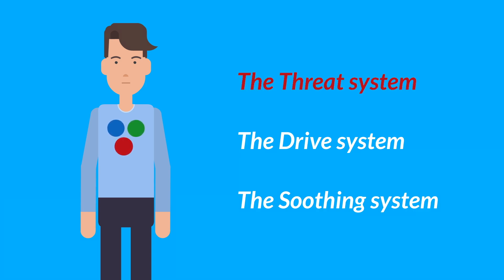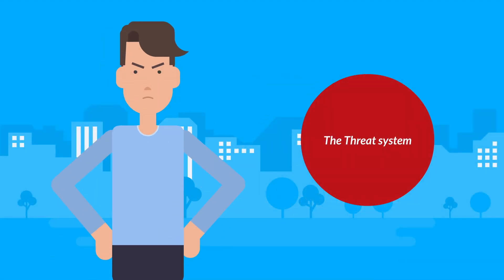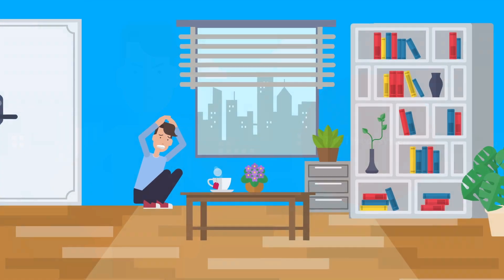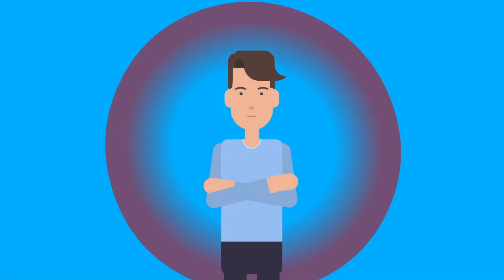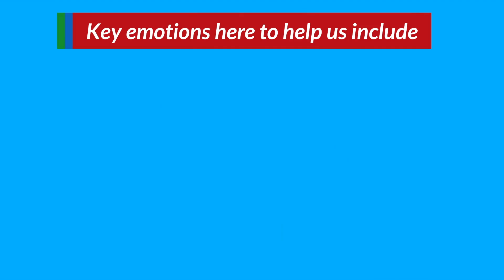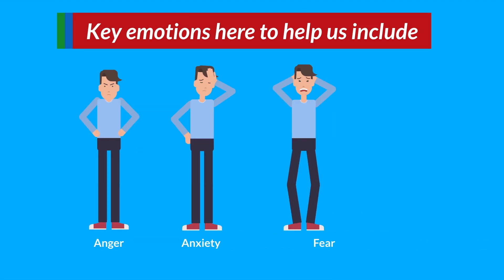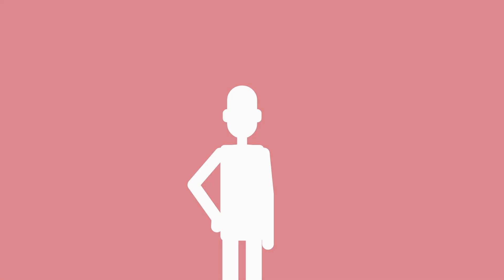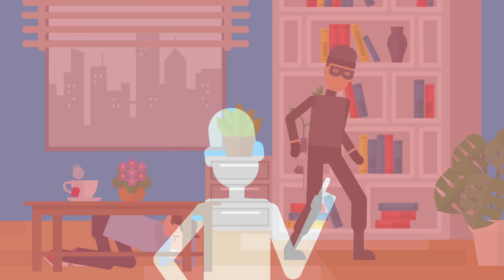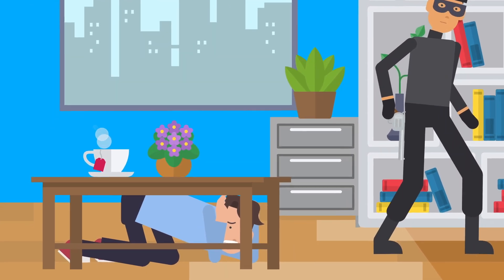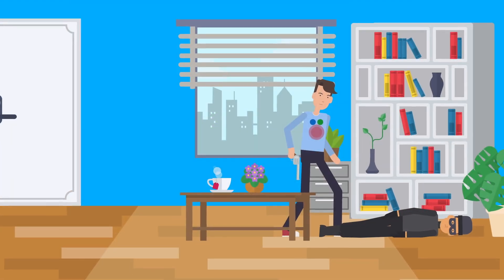First, the threat system, or as we like to call it the red circle. This is our most powerful and dominant system. It helps us identify threats and keeps us protected. Key emotions here to help us include anger, anxiety, fear, and disgust. These emotions help stimulate us into action so we can either avoid the danger or if we need to confront it.